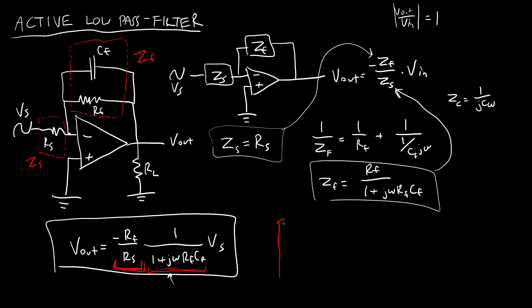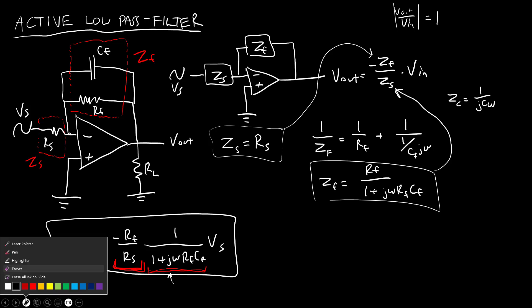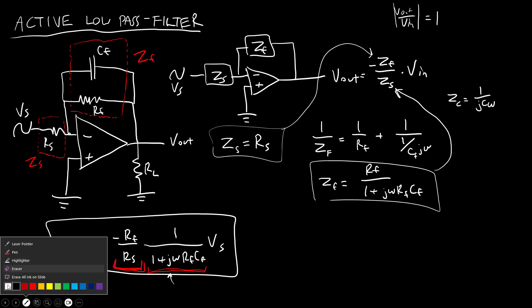Again, if we were to look at frequency response, we have that ratio of the magnitude of V out over V in versus omega for the passive low-pass filter. That was never going to be bigger than one. But depending on the value we select, or values we select for RF and RS, we can now get a gain of greater than one with the active low-pass filter.